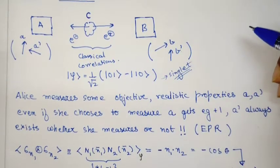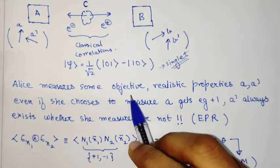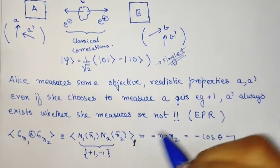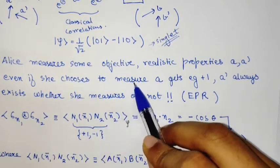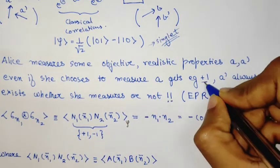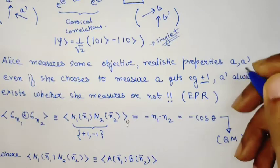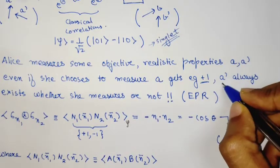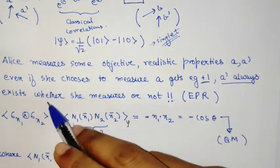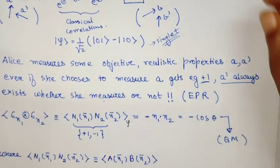Alice measures this objective, realistic property. Suppose she chooses to measure A and gets a value +1. That doesn't mean that A' measurement can't be done. A' always exists whether she measures A or not. This is the EPR argument.